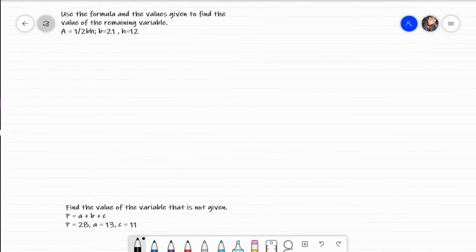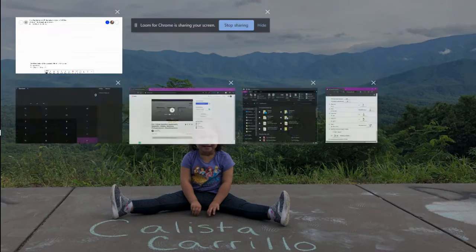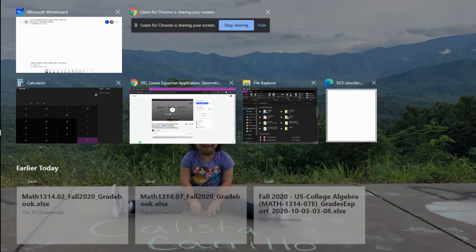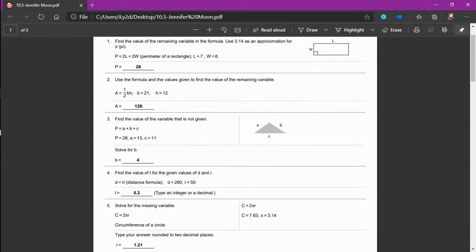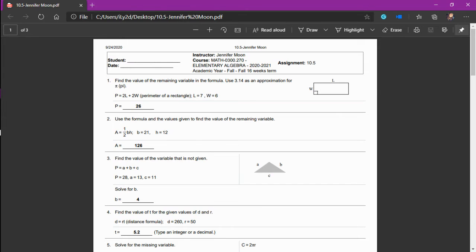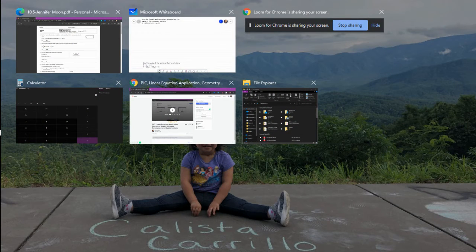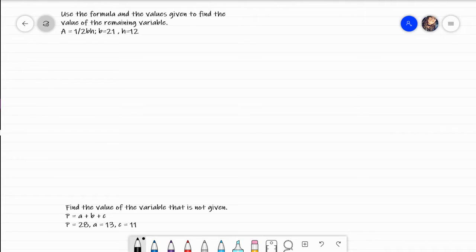This one tells me to use the formula and the values given to find the value of the remaining variable. That's saying solve for the variable that we don't know. It doesn't actually tell me what this formula is, so there's no reason to introduce it because it just gives us a formula and it's telling us to solve.